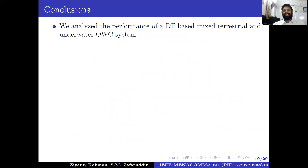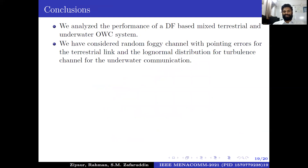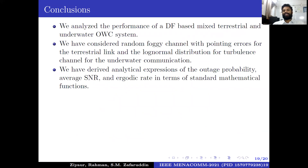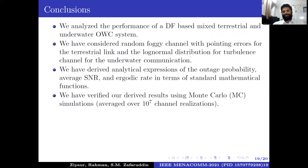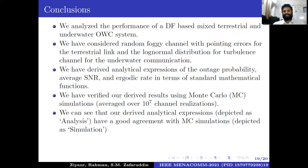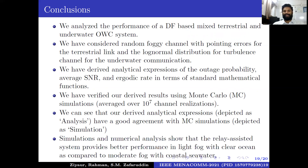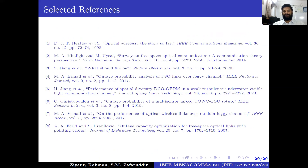We analyzed the performance of a DF-based mixed terrestrial and underwater OWC system. We considered a random foggy channel with pointing error for the terrestrial link, and log-normal distribution for the turbulence channel for underwater communication. We derived analytical expressions for outage probability and ergodic capacity in terms of standard mathematical functions. Results verified using Monte Carlo simulation show that relay-assisted systems provide better performance under light fog with clear ocean, as compared to moderate fog with coastal seawater.